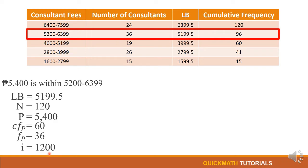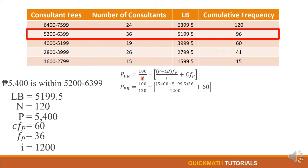So now let's use the formula. So by substitution we have 100 over our N here is 120, plus our P or the raw score is 5,400, minus the LB which is 5,199.5, times the frequency which is 36, over the interval which is 1,200, plus the cumulative frequency which is 60.